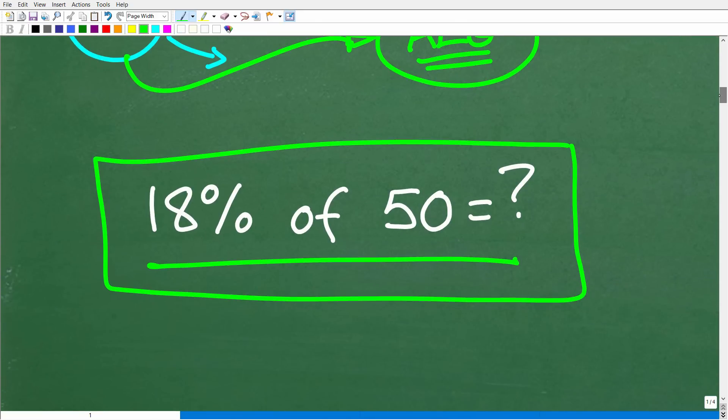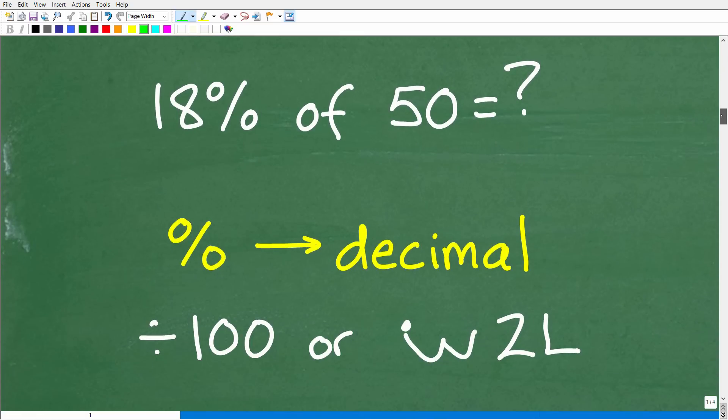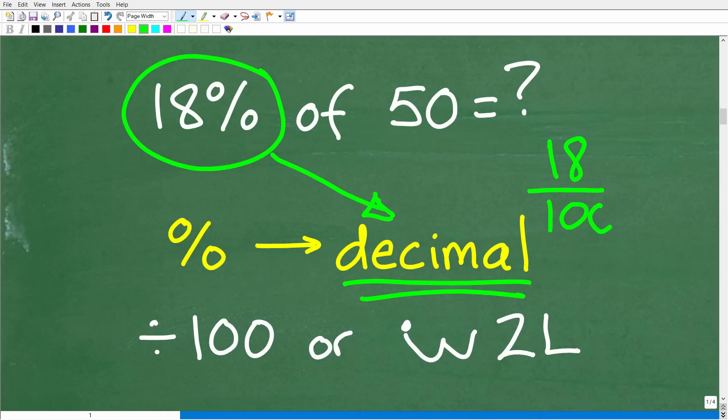Alright, so 18% of 50. How do we find the percent of a number? Well, let's go ahead and review that procedure right now. So it's basically pretty easy. What we need to do is change this percent into a decimal or a fraction. But typically we change a percent into a decimal. So how do we change a percent into a decimal easy? All we have to do is simply divide this number by 100. So when you divide a number by 100, effectively what you are going to do is move or the resulting thing that happens is the decimal point moves over two places to the left.